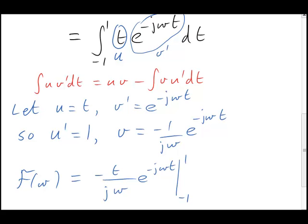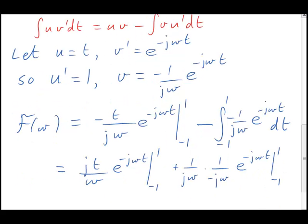Here, first of all, is the u v part. Then we need to subtract the integral of v times u primed. But that new integral is now just a simple exponential with a constant next to it. So we can do it easily. Let's continue the calculation.